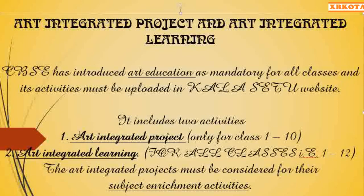There are two activities: one is art integrated project and the second is art integrated learning. Art integrated project is only for students of class 1 to 10, whereas art integrated learning is for all students from class 1 to 12. CBSE also emphasizes another thing — the topic of Ek Bharat Shrestha Bharat.